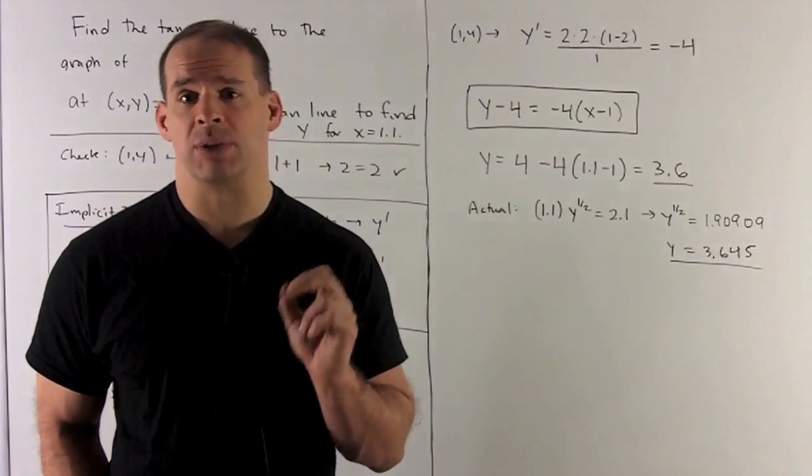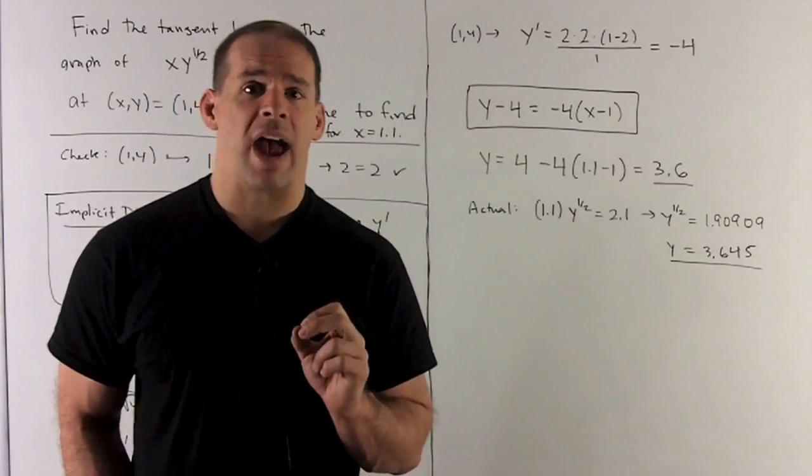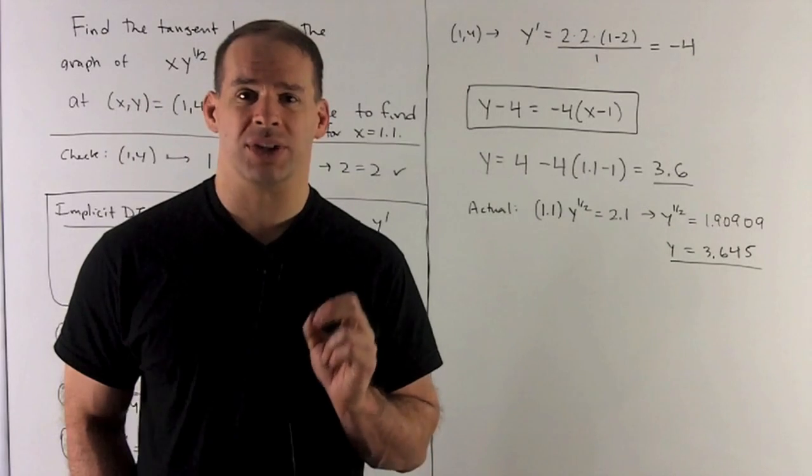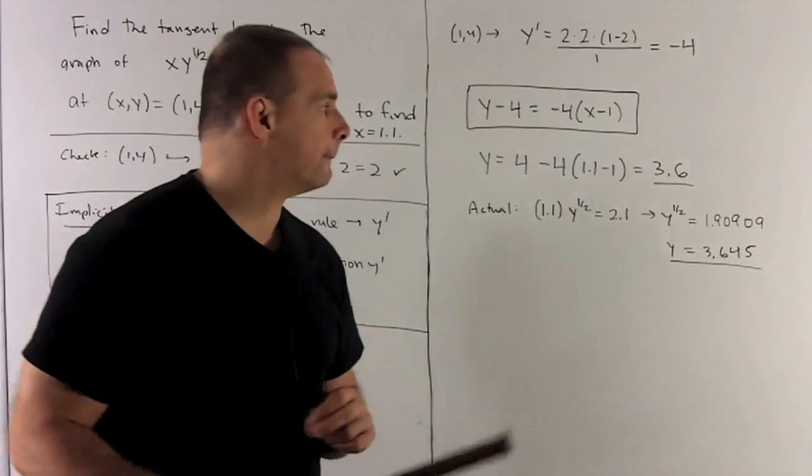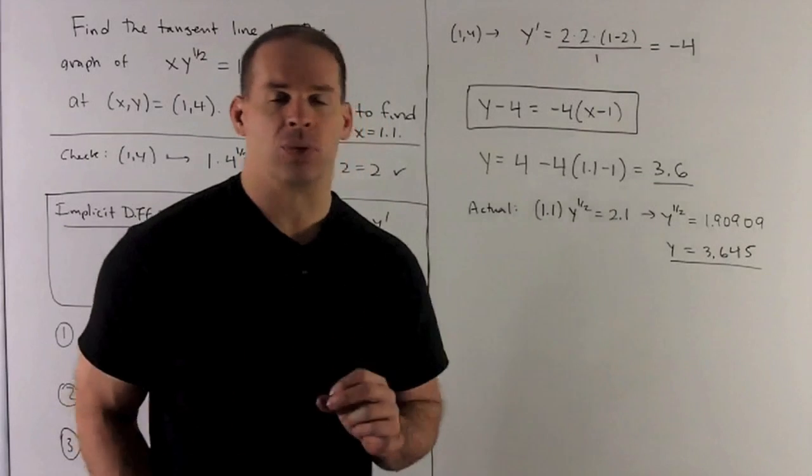Now, we want to approximate the point on the graph where x = 1.1 using this line. So I just put 1.1 in for x and see what comes out. When I do that, we get 3.6.